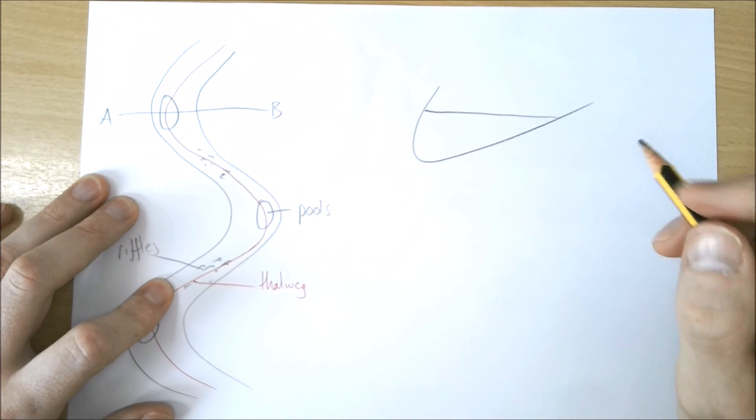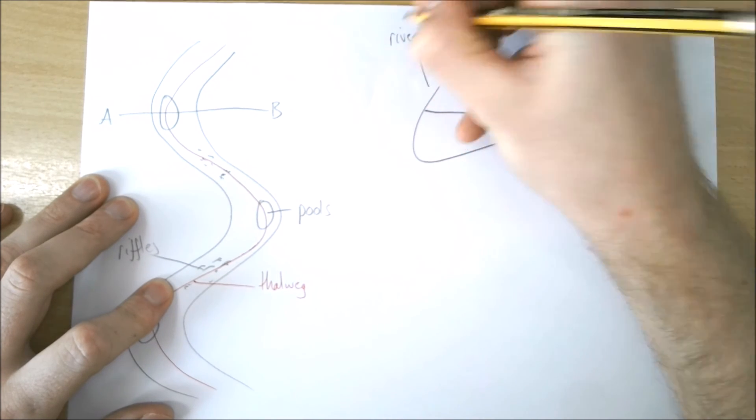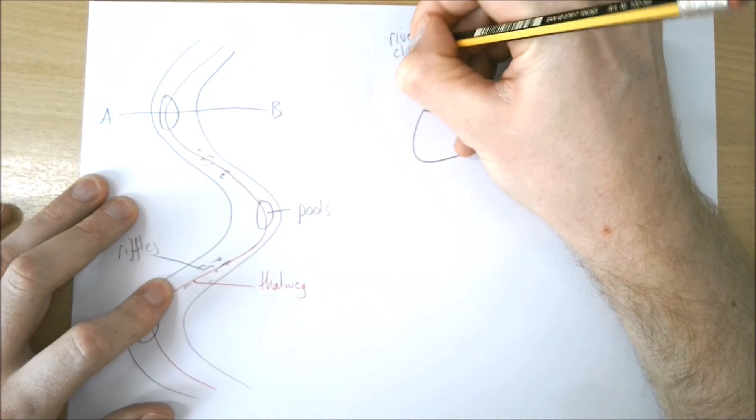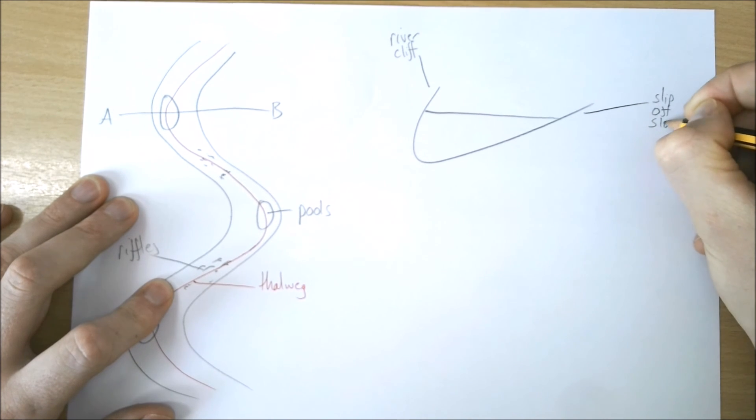As we're labeling this, we need to label the outside of the meander—that's called the river cliff. The inside of the meander, I tell my students 'SOS'—slip-off slope. It can also be known as a point bar, so be aware of that.